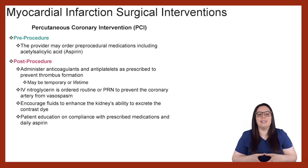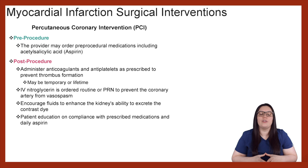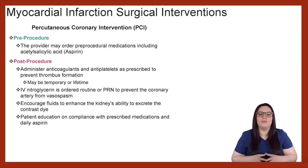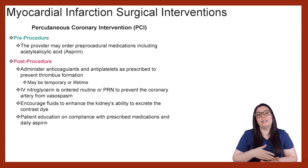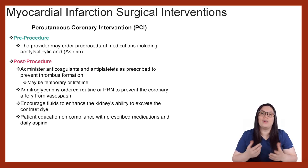When it comes to pre- and post-procedure care for PCI: pre-procedurally, the provider may order medications such as aspirin prior to the procedure. Post-procedure, we want to administer anticoagulants and anti-platelets as prescribed to help prevent thrombus formation. Patients could be on these medications temporarily or permanently for their lifetime depending on the interventions used. We may also give IV nitroglycerin routinely or PRN to help prevent coronary artery vasospasms post-PCI. We encourage fluids because this helps the kidneys excrete the contrast dye used during the procedure, and we provide patient education on medication compliance, including the importance of a daily aspirin.